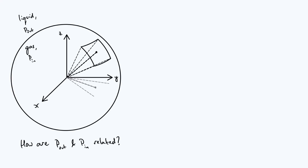Hello everyone. In today's video we're going to be thinking about pressure differences inside and outside spherical bubbles and balloons. This pressure difference is known as the Laplace pressure. We'll consider a couple of different but very closely related scenarios throughout the video. The first scenario is one I've already sketched out: a large container of liquid with a bubble of gas inside it. There's a pressure P_out in the liquid and pressure P_in within the gas bubble itself, and the question we want to answer is how those two pressures are related.